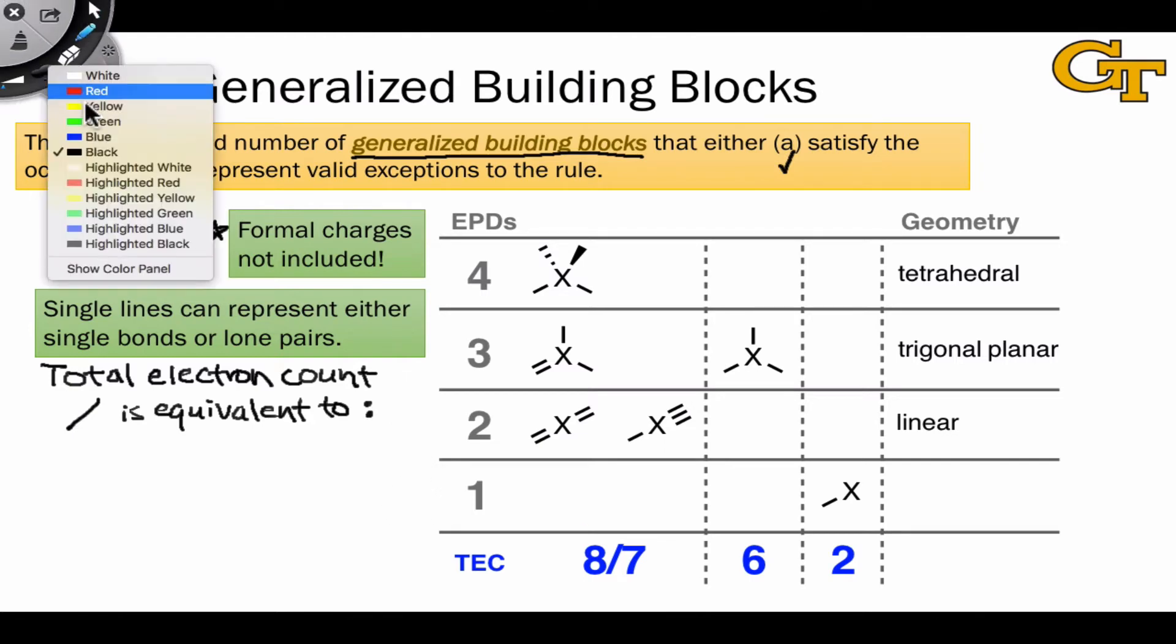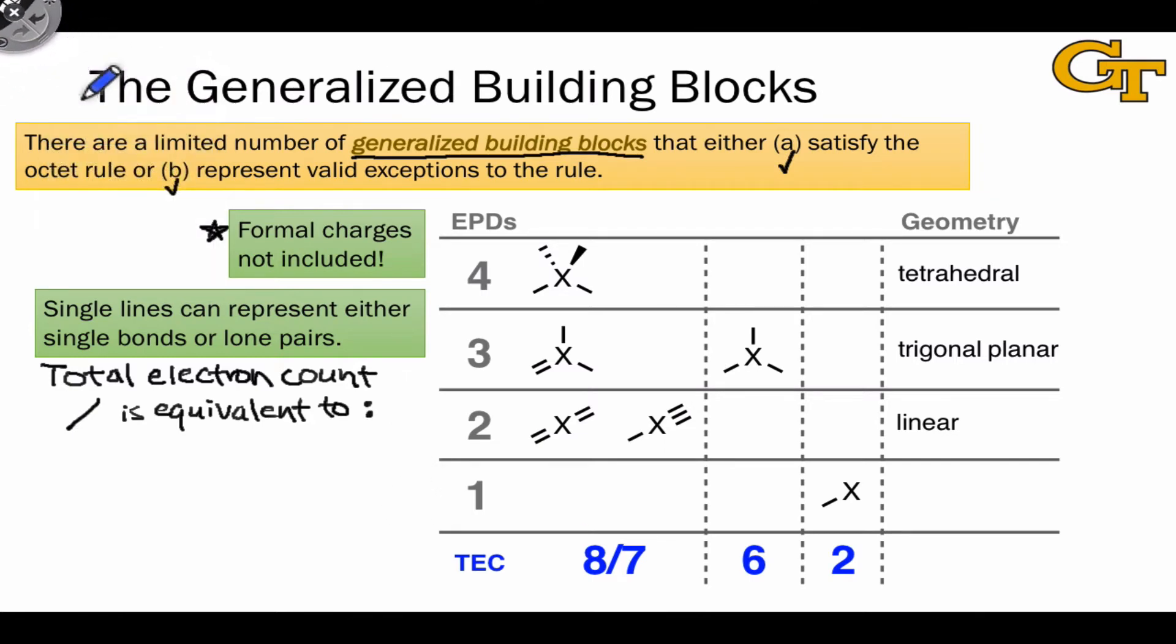This is because from the perspective of total electron count and the octet rule, a single bond counts as two electrons and a lone pair counts as two electrons.